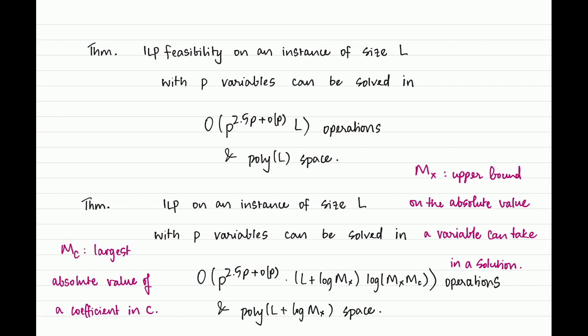If you had access to the ILP feasibility algorithm as a black box, you can use it to solve the full ILP optimization problem by performing a binary search over the range of possible values your optimization objective can take. When you guess a particular value, you simply add one more constraint and check feasibility. Depending on the output, you can truncate the range one way or the other. This binary search adds a logarithmic overhead on top of the ILP feasibility running time.